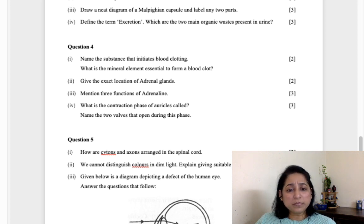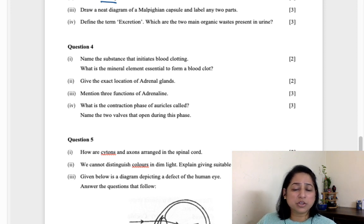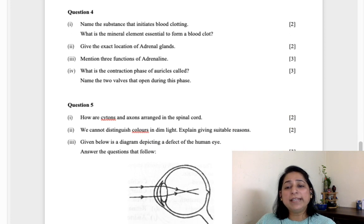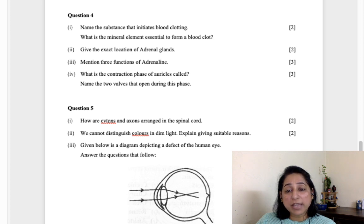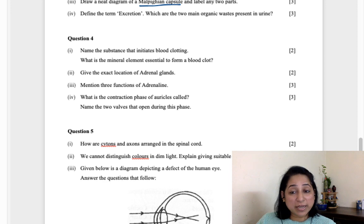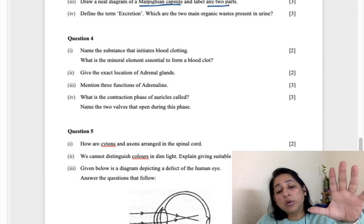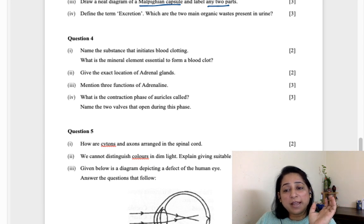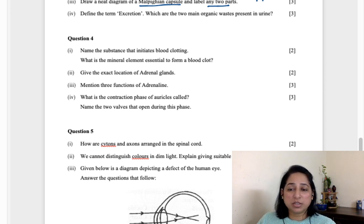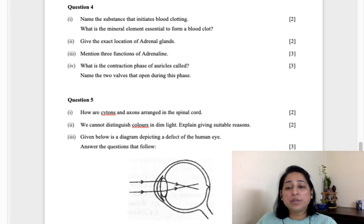Draw a neat diagram of Malpighian capsule, label two parts. You just have to label two parts, you don't have to label more, so just focus on glomerulus and Bowman's capsule. This is the Bowman's capsule and inside the Bowman's capsule is the capillary network known as glomerulus. This whole structure is Malpighian capsule. Define the term excretion - which of the two main organic compounds are present? They are talking about nitrogenous waste, so urea, uric acid, etc. What is excretion? Removal of waste from the body is known as excretion.